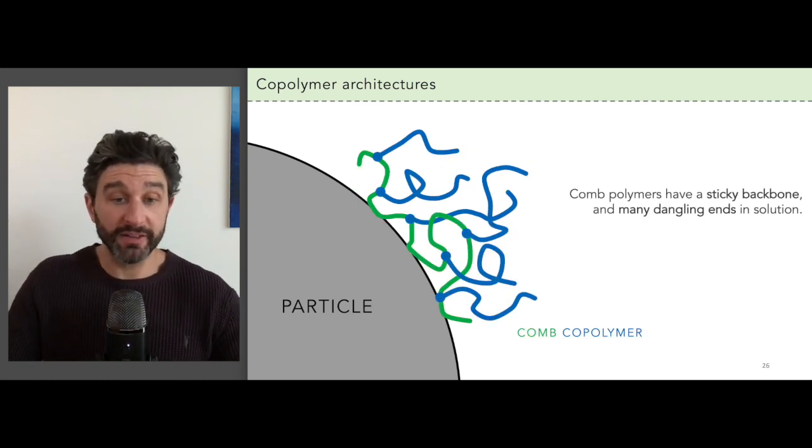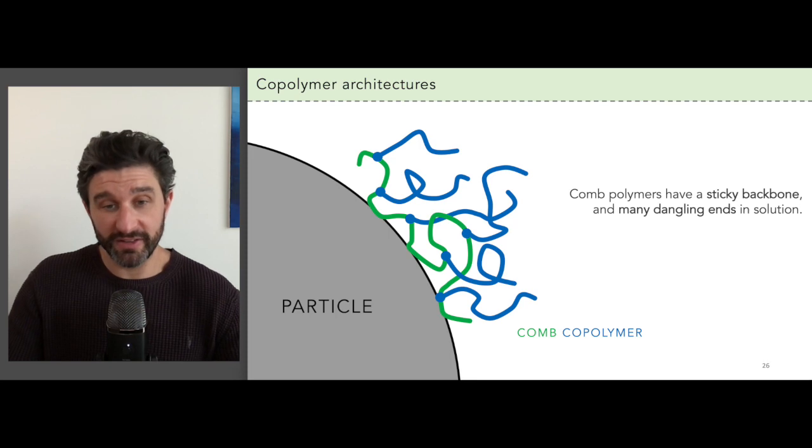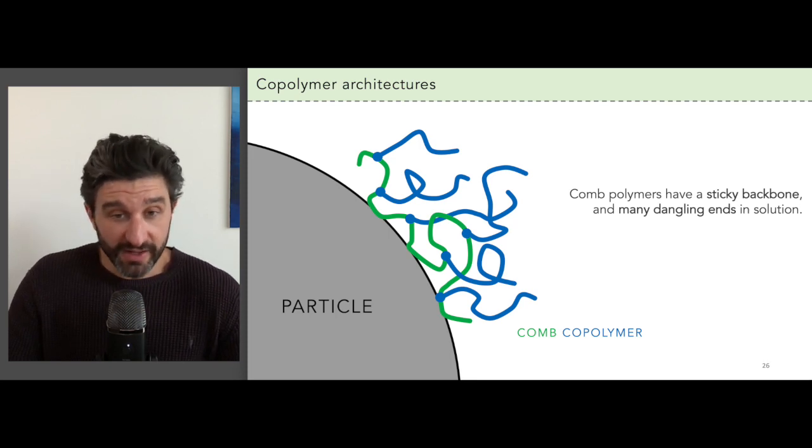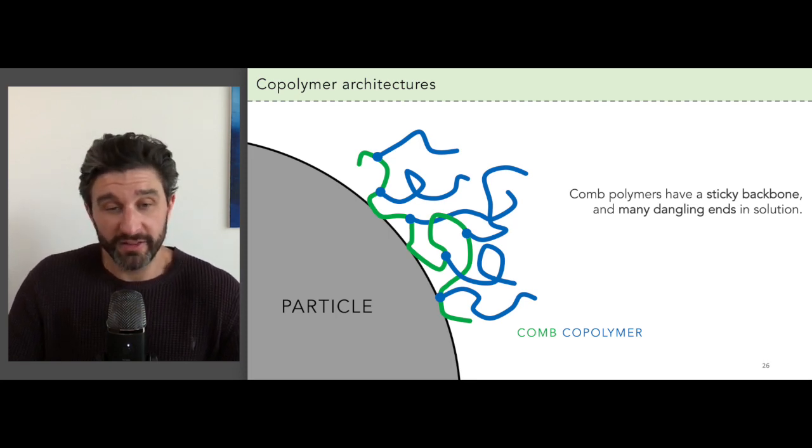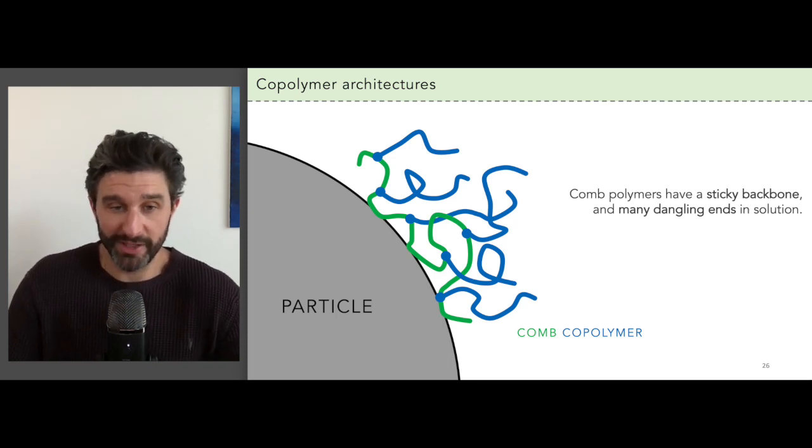Another great copolymer design is a comb, which can be designed with a sticky backbone, and then the teeth side chains can be non-absorbing. This is basically a bulkier version of a diblock architecture in terms of micropillow effect.